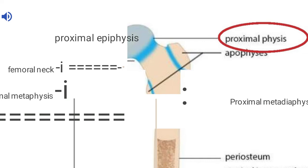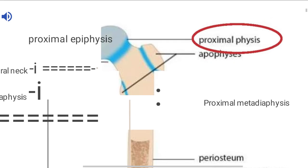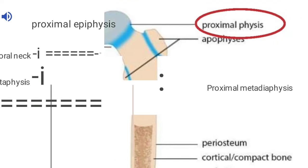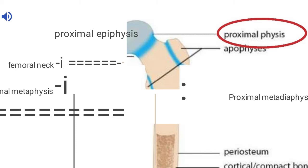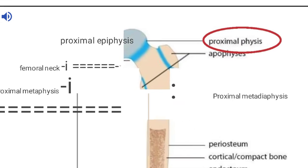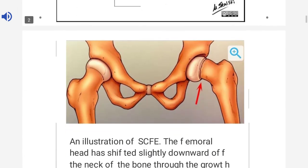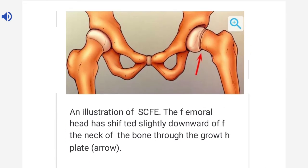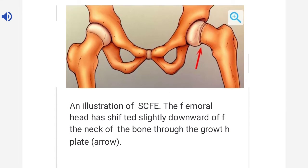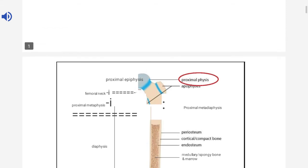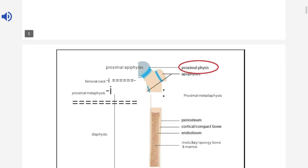The femoral neck is the metaphyseal area. So we have the epiphysis, the physis, and below the physis we have the metaphysis where the proximal neck is. The proximal physis is the place where the slip occurs. In this illustration, the femoral head is shifted slightly downwards off the neck through the growth plate — that is, through the physis.